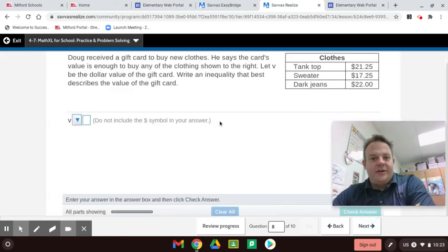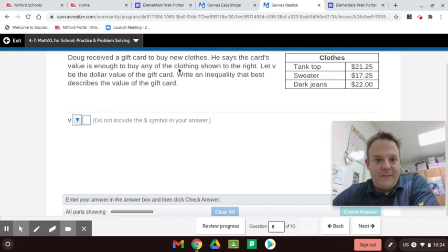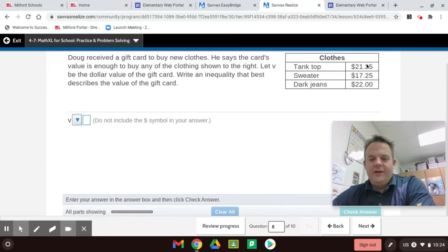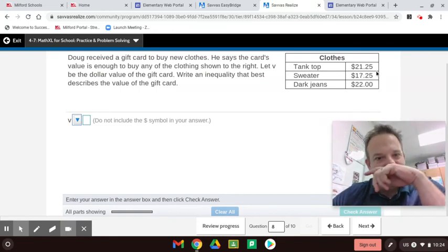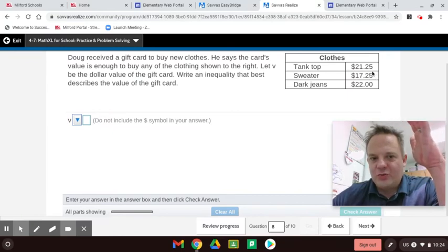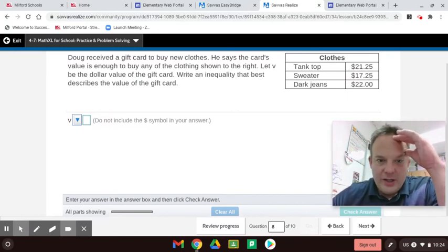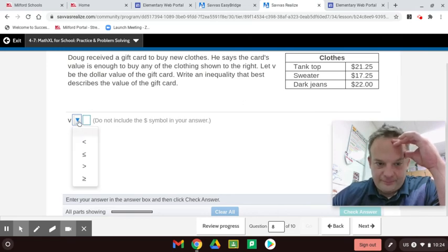Doug received a gift card to buy new clothes. He says the card's value is enough to buy any of the clothing shown to the right. Let V be the dollar value of the gift card. Write an inequality that best describes the value of the gift card. So, the gift card could buy anything here. He says the gift card value is enough to buy any of the clothing shown to the right. Are we talking just one clothing or more than one? So, maybe he's just talking one. I think the question's not necessarily worded. So, I'm going to try this one first. So, the value of the gift card is less than or equal to 22.